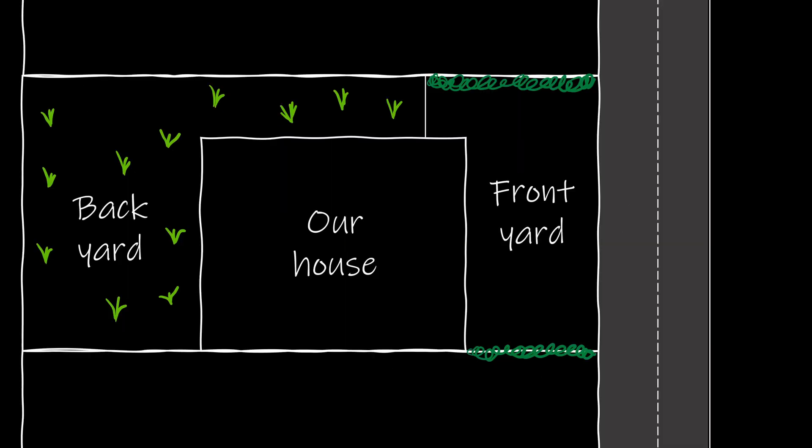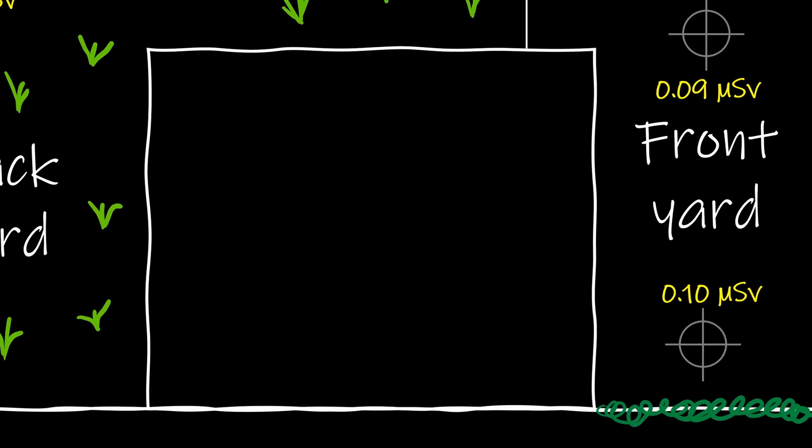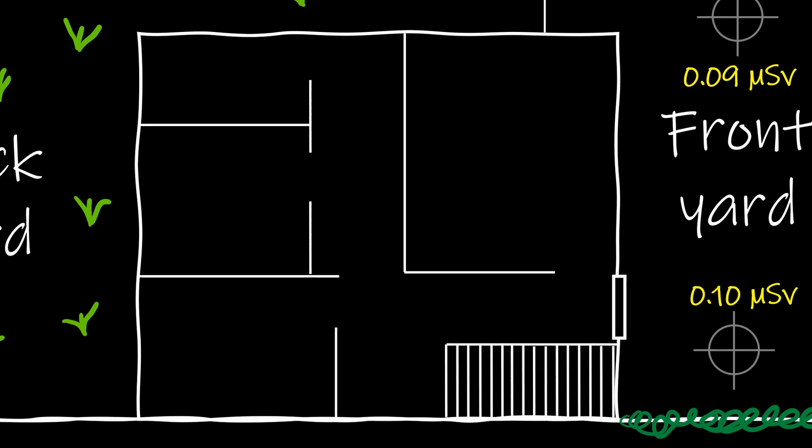First of all, go outside your home and away from buildings, and take a long duration reading of the background levels in your local area. This will probably be the lowest reading you are going to find. On a piece of paper, draw a simple map of the rooms in your home. Next, take five measurements of the average levels in each room, one from the center and then one from each corner.